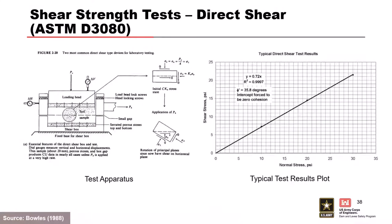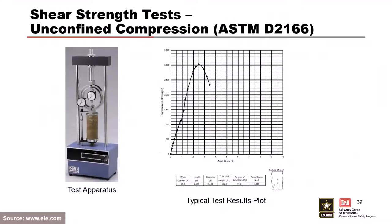The direct shear test is simple and commonly used in highway embankment construction, but rarely for dam construction. It forces the failure plane through the sample, which is not ideal — we want the failure plane to develop where it naturally wants to go. Direct shear only yields peak strengths, which isn't always what we need for dam design.